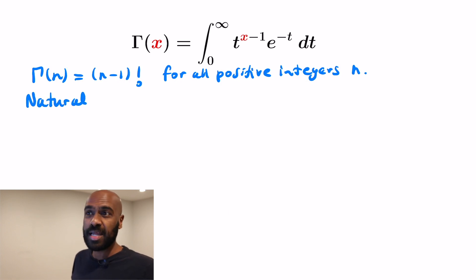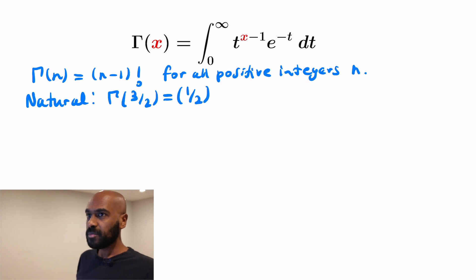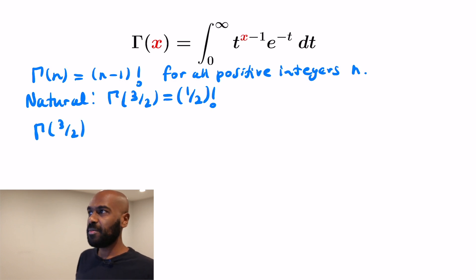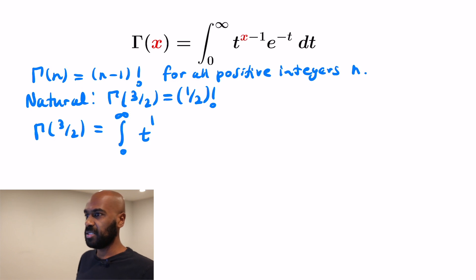That tells us there's a natural interpretation for what half factorial should be: it should be gamma of 3 halves, since it's like a factorial just off by one index. So to figure out this reasonable interpretation of a half factorial, we compute gamma of 3 halves. Gamma of 3 halves is the integral from 0 to infinity of t to the half times e to the negative t dt.